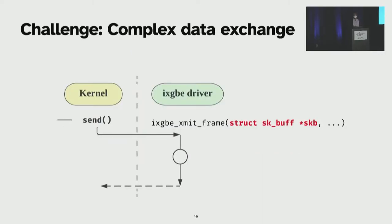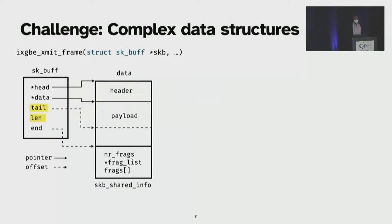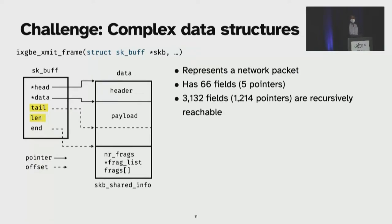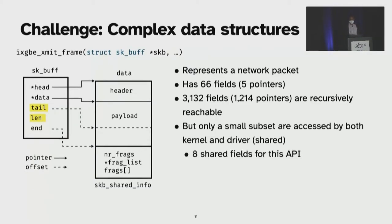Here's an example of one such driver exported function which is used for transmitting network packets through this device. The kernel passes an SK buff data structure that represents a network packet in the Linux kernel. To understand how complicated this data structure is, we should look at its definition. It contains around 66 fields, of which five are pointers. Since we are maintaining separate object hierarchies, we shouldn't look only at those 66 fields. We should see how much of those 66 fields can reach, which is all the recursively reachable fields from those 66 fields, which amounts to 3100 fields, of which 1,200 are pointers. But in reality, only a small subset of those fields are accessed by both the kernel and the driver. And for this particular API that is transmitting a network packet, we just need eight shared fields.